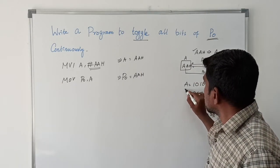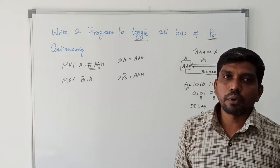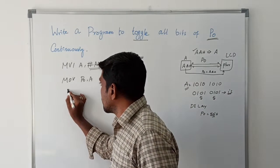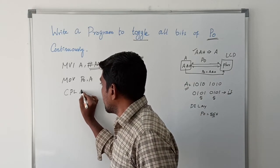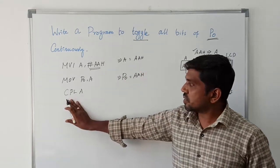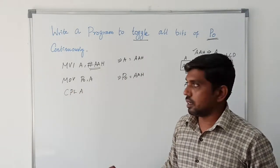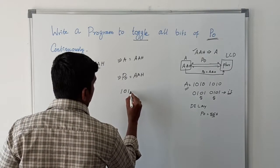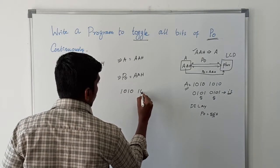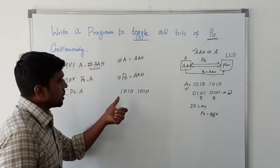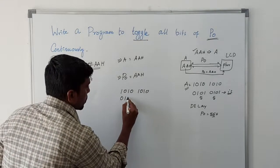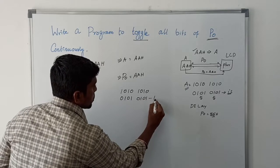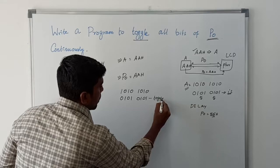The next process is toggling. Here we are applying the complement instruction: CPL A. CPL represents the complement of the accumulator content. Now the accumulator content is AAH, with binary value 10101010. After taking the one's complement, you get the result 01010101. This process is called toggling.